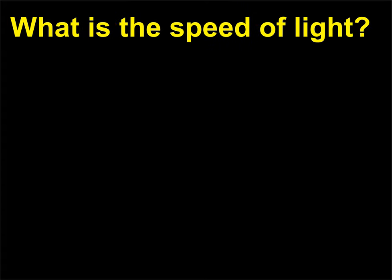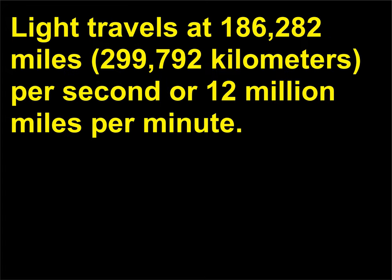What is the speed of light? Light travels at 186,282 miles (299,792 kilometers) per second, or 12 million miles per minute.